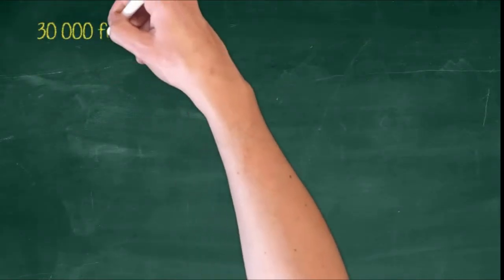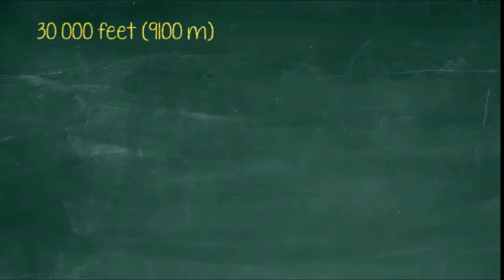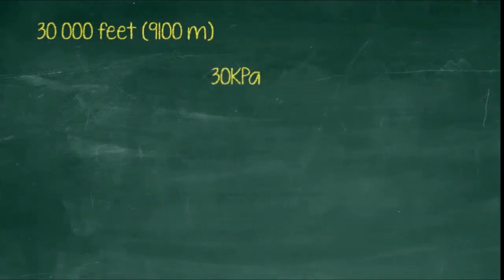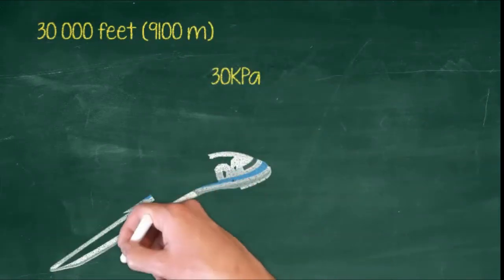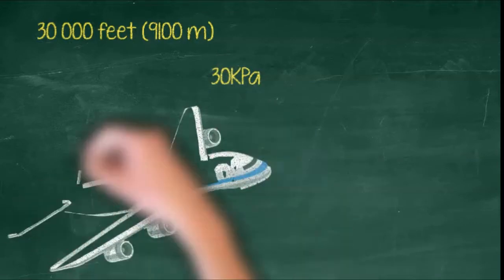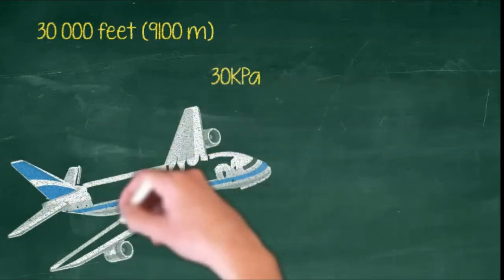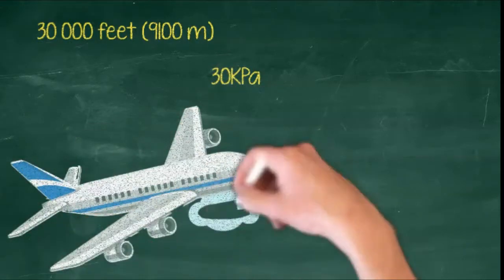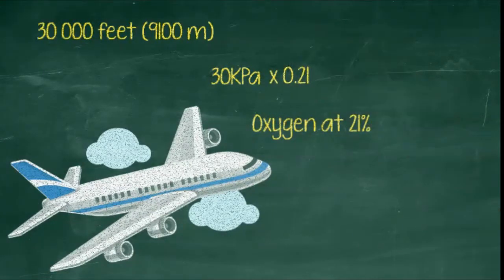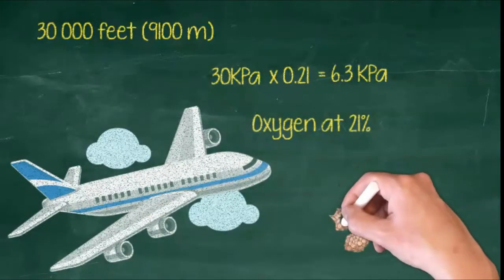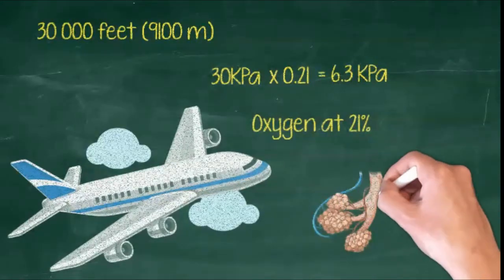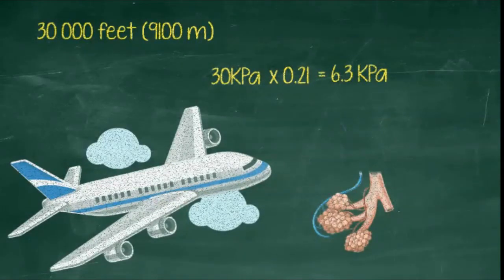At 30,000 feet, atmospheric pressure is now 30 kPa. So if the total pressure is 30 and oxygen is still about 21% of the atmosphere, then we can calculate that the partial pressure of oxygen at 30,000 feet is about 6.3 kPa. But a body is still a body and the PaO2 is still 10 to 14 kPa. So which direction is oxygen going to move across the alveolar membrane at 30,000 feet?